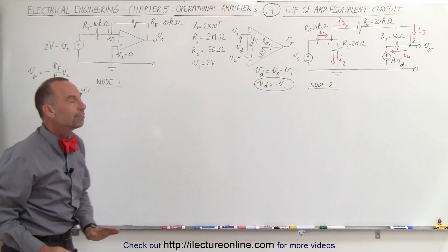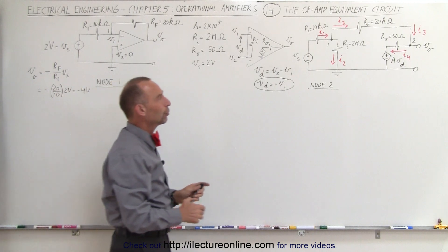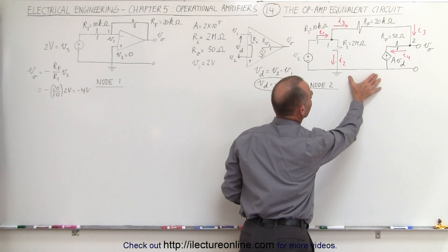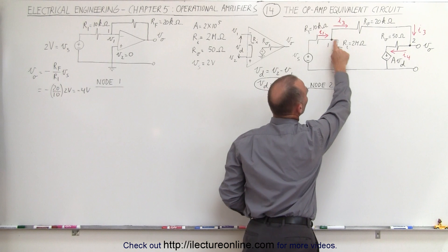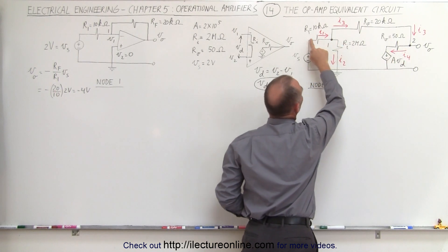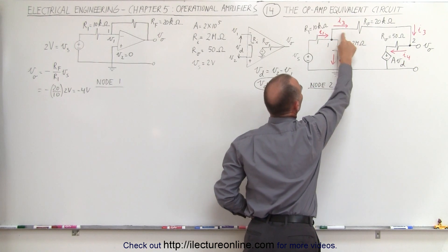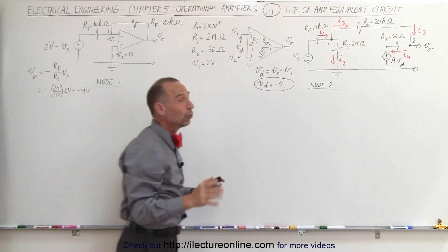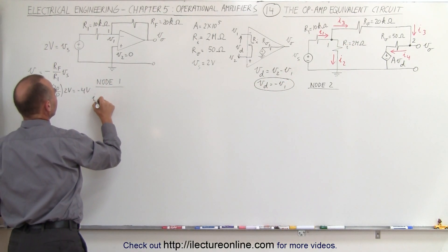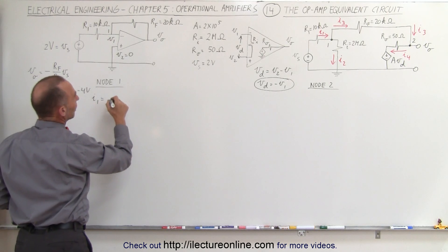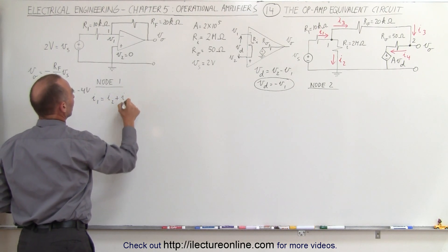Now let's solve for the output voltage using the equivalent circuit. We recognize there are two nodes. We have an input current and currents flowing in two directions, so at node 1 we can write: I_1 equals I_2 plus I_3.